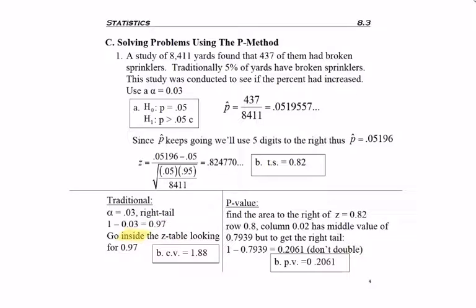So I go in the middle of the z table, and when you look for 0.97, it's going to be closest to positive 1.88. So I now have my critical value.